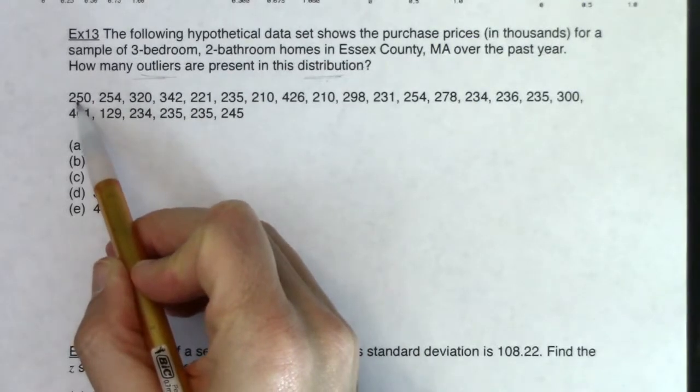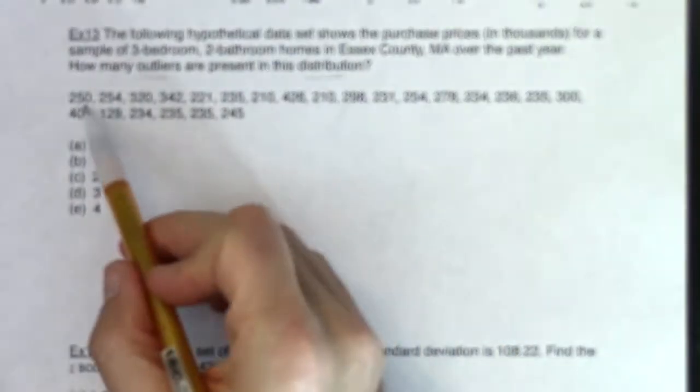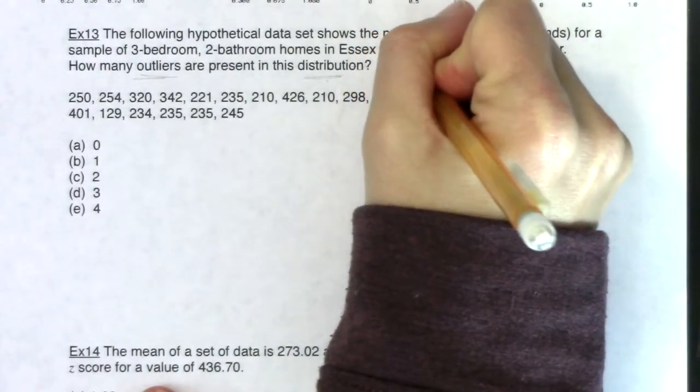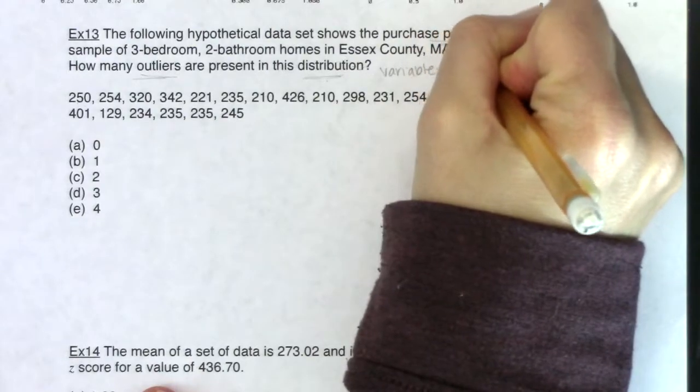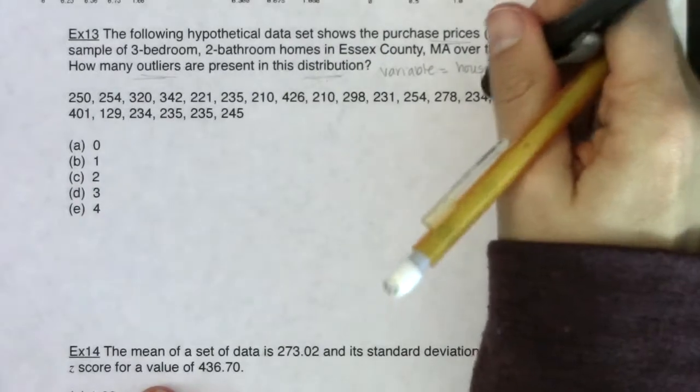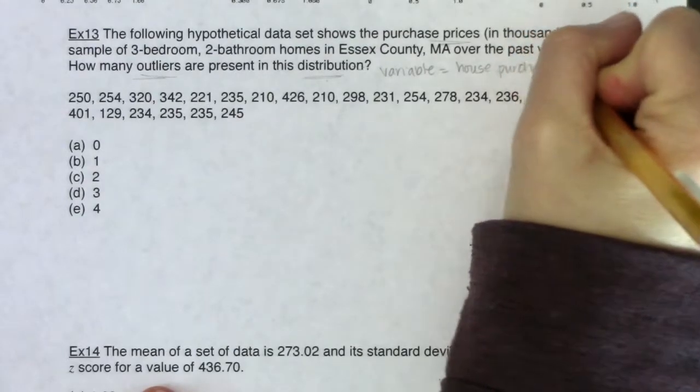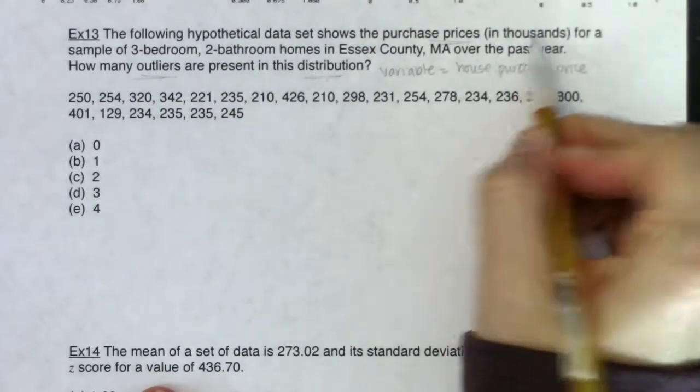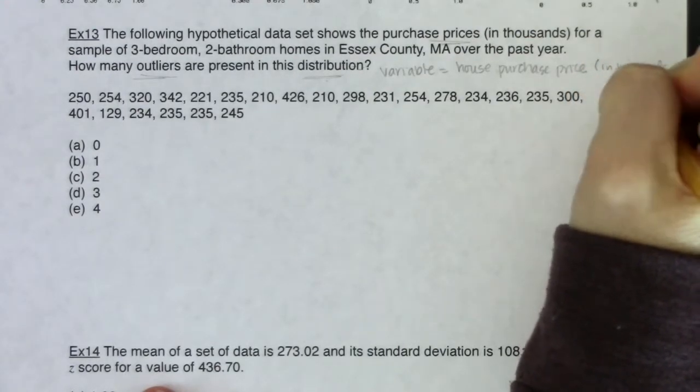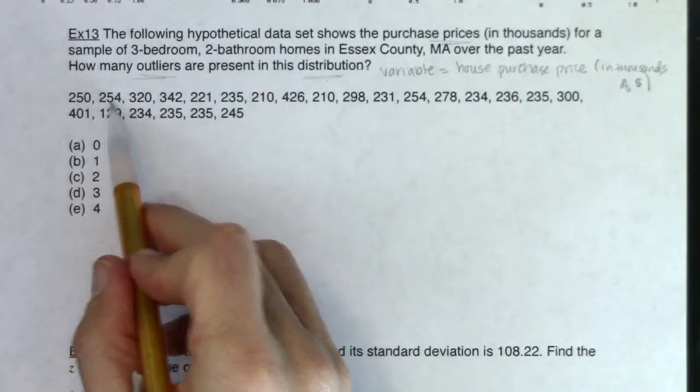All right, so let's see, what do these numbers represent? What is the variable in this problem? 250 what? If we look at it, it says it's the purchase price. So my variable is house purchase price. And they say that's in thousands and that would be in thousands of dollars. So this means 250,000, 254,000, so on and so forth.